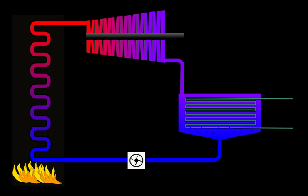The four processes in the Rankine cycle. There are four processes in the Rankine cycle. The states are identified by numbers in brown in the TS diagram.